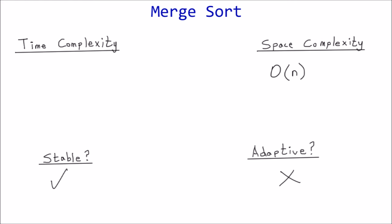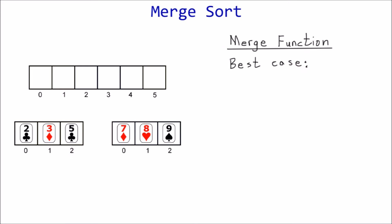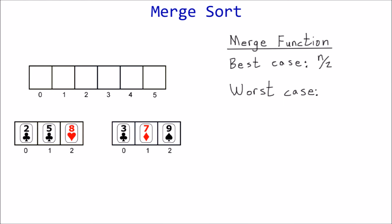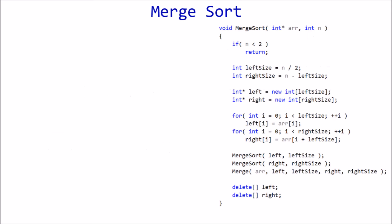Time complexity: as we did with selection, bubble, and insertion sort, this analysis will be based on the number of comparisons made. All comparisons take place in the merge function, so let's look at that first. The best case scenario is exiting the first loop as soon as possible — this occurs when the largest element of one sorted sublist is smaller than the first element of the other, meaning one list is completely iterated through before touching the other. This translates to n/2 comparisons. The worst case occurs when the two largest elements are in opposite lists, making every possible comparison — n minus one. In big-O terms, both cases are O(n).